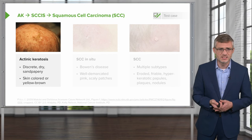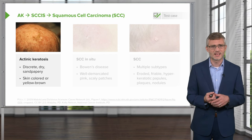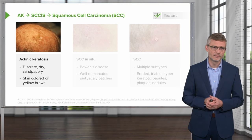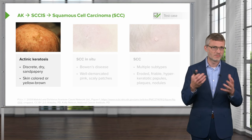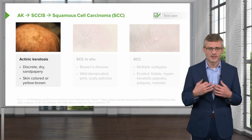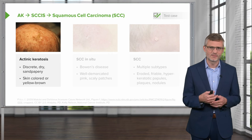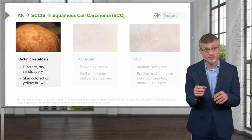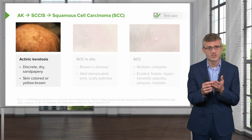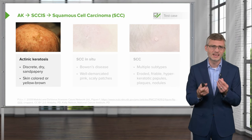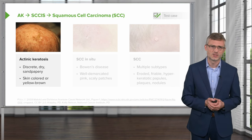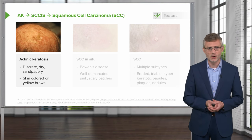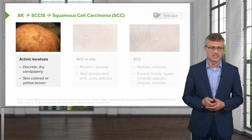Actinic keratoses are described as these discrete, dry, sandpapery, skin-colored or yellow-brown papules. They're incredibly common, very hard to see just visually until you reach in close, look very closely at the skin, and then rub your fingers on the lesion, and you'll feel that sandpapery lesion, especially on the scalp of folks who are balding or bald, or on the backs of the hands.